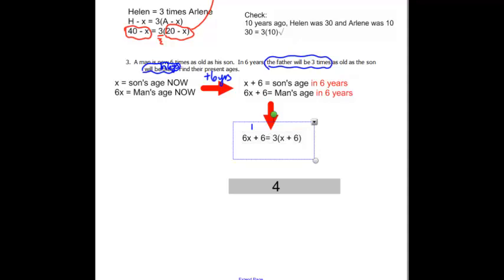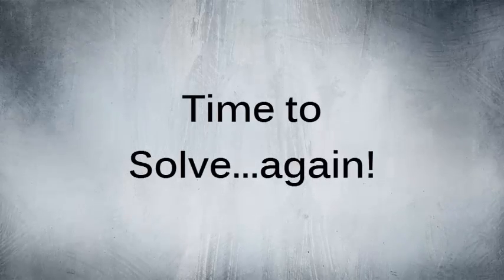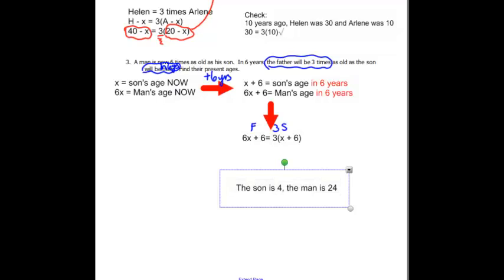So the father is going to be three times as old. Remember, this is dad, that's the father. Three times as old as the son. Solve that. And what do you get? You get the son is four and the man is twenty-four. Does that make sense? Well, in six years, the son will be ten and his father will be thirty. And that makes sense that he's three times as old.